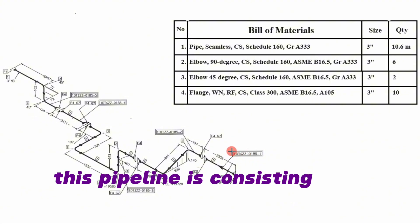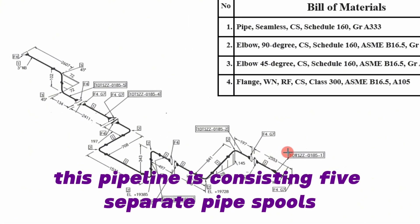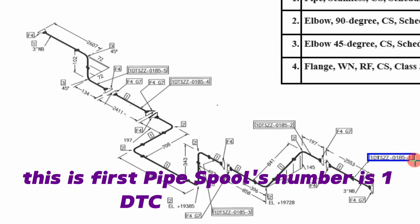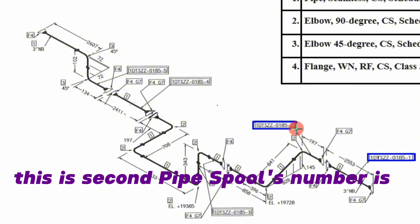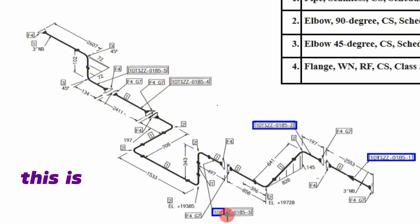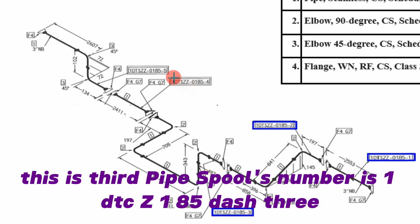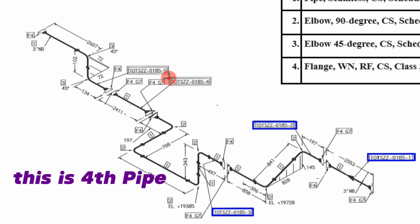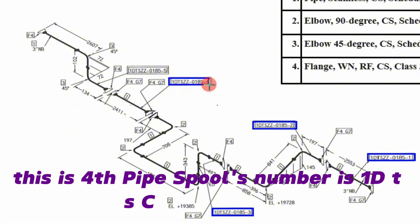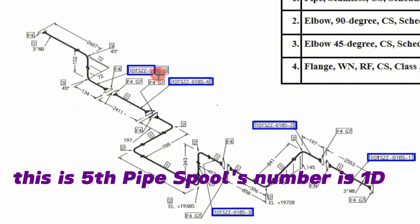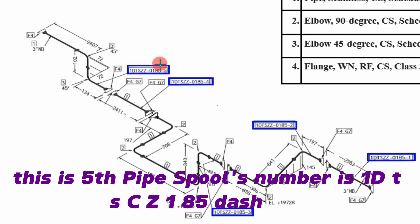This pipeline consists of 5 separate pipe spools. The first pipe spool number is 1DTSCZ 185-1. The second is 1DTSCZ 185-2, the third is 1DTSCZ 185-3, the fourth is 1DTSCZ 185-4, and the fifth is 1DTSCZ 185-5.